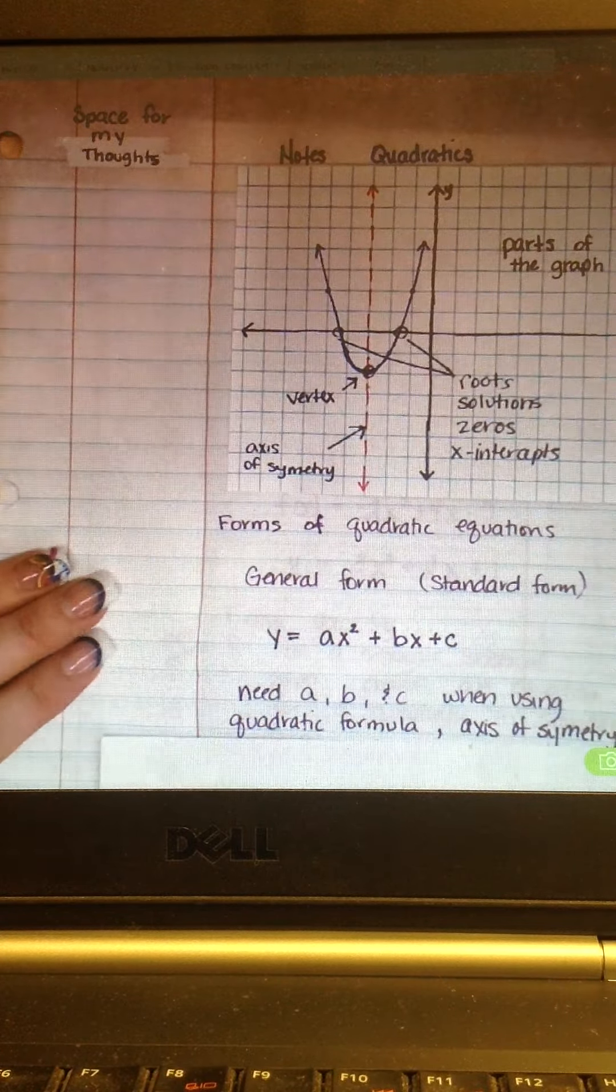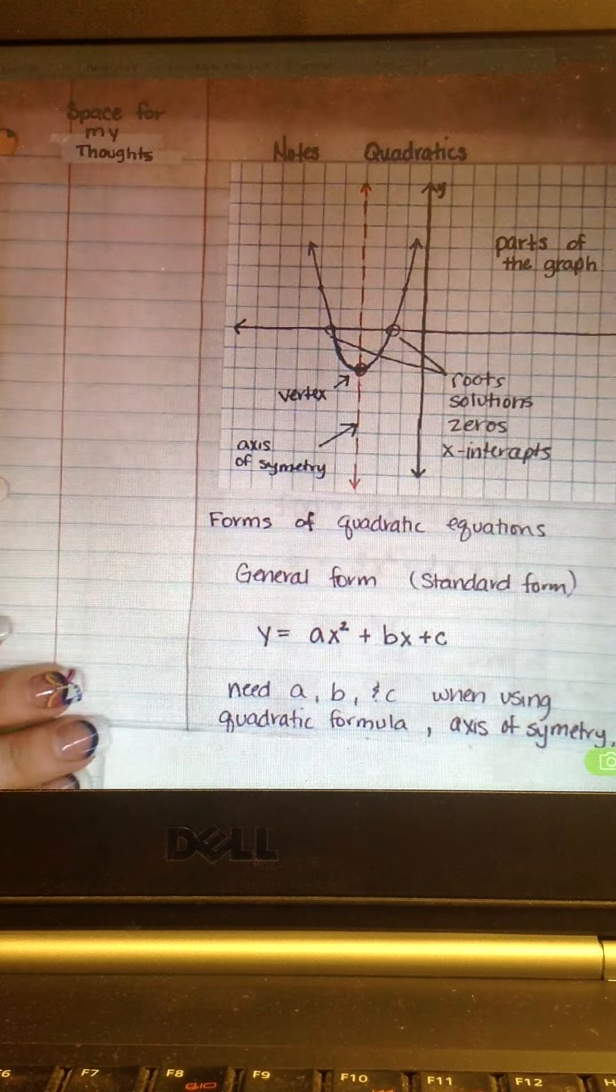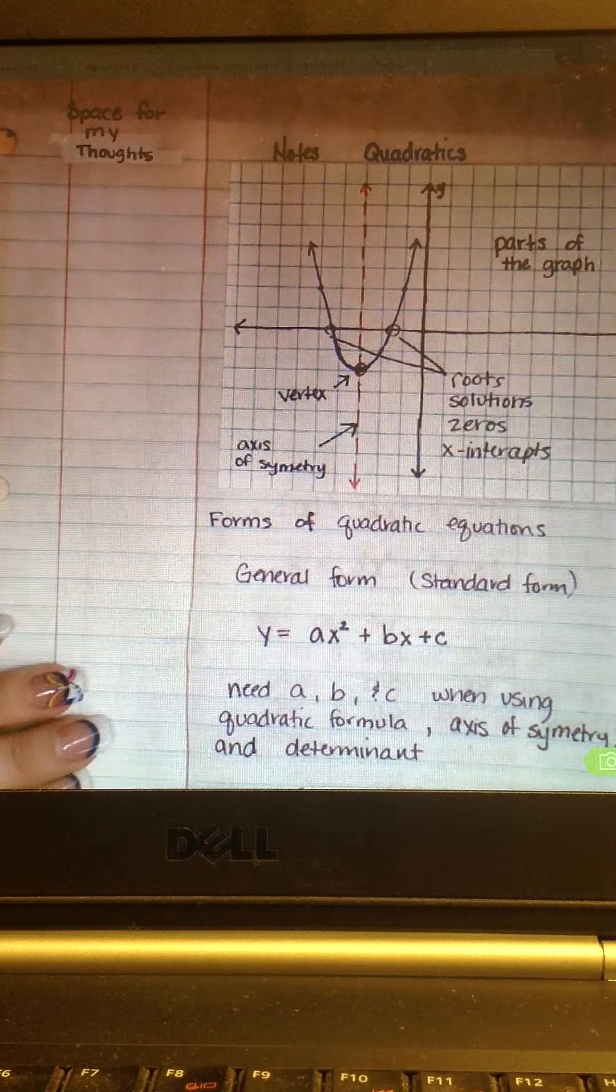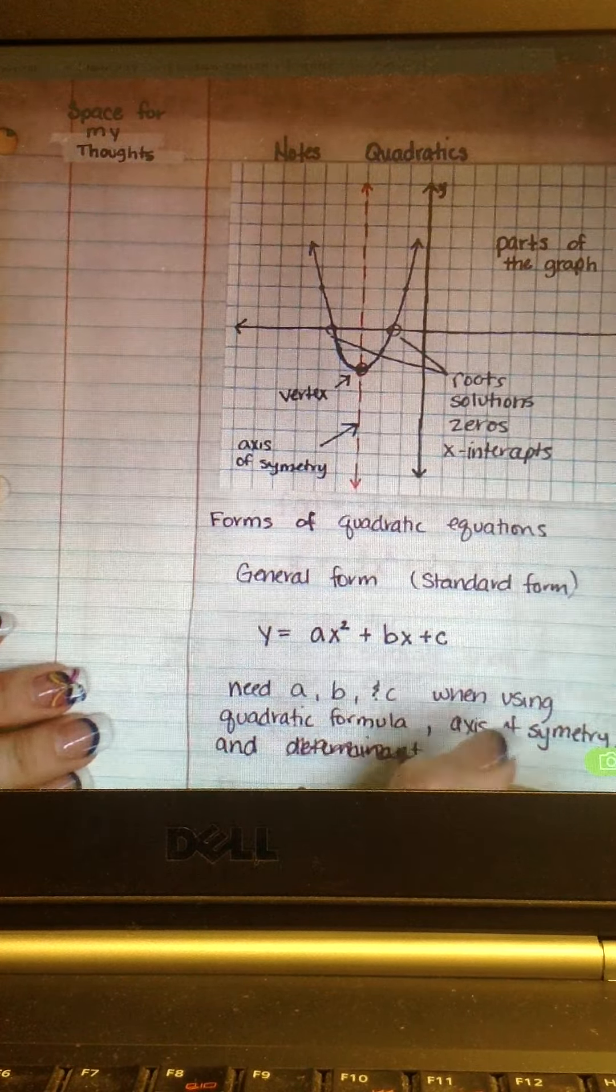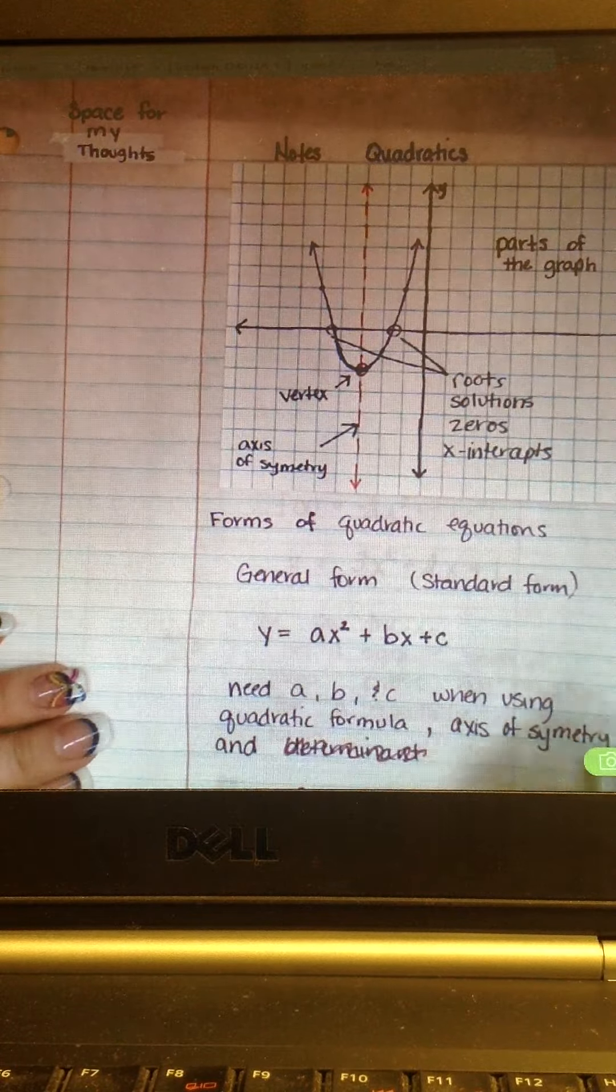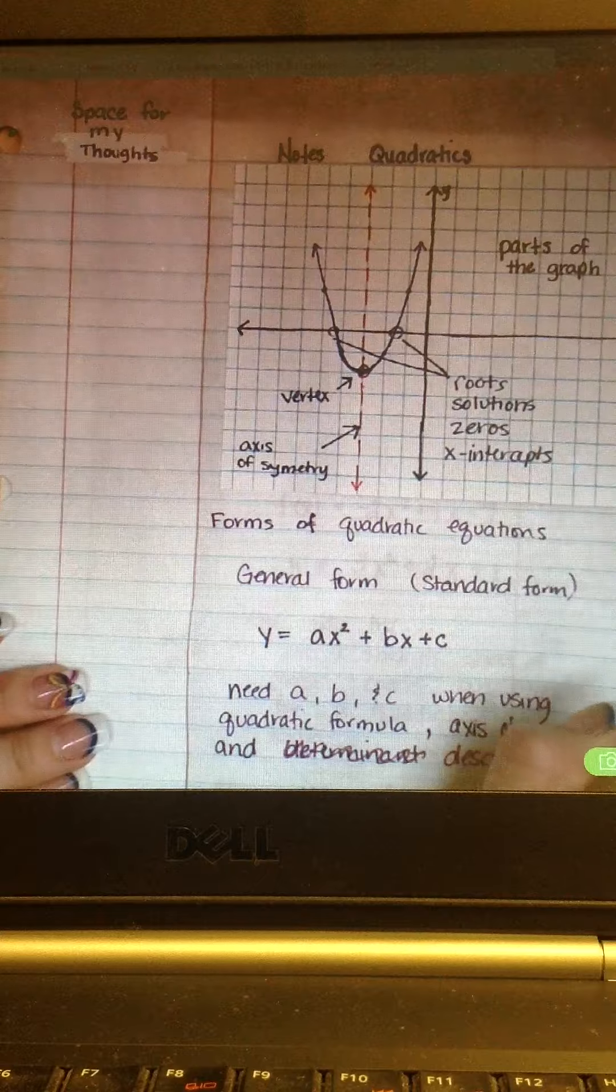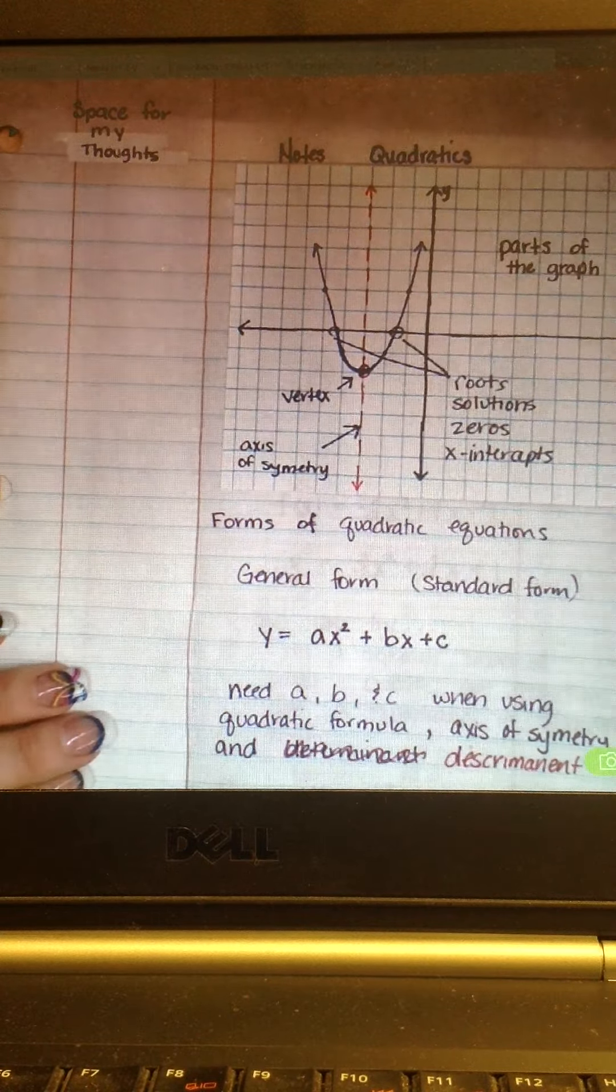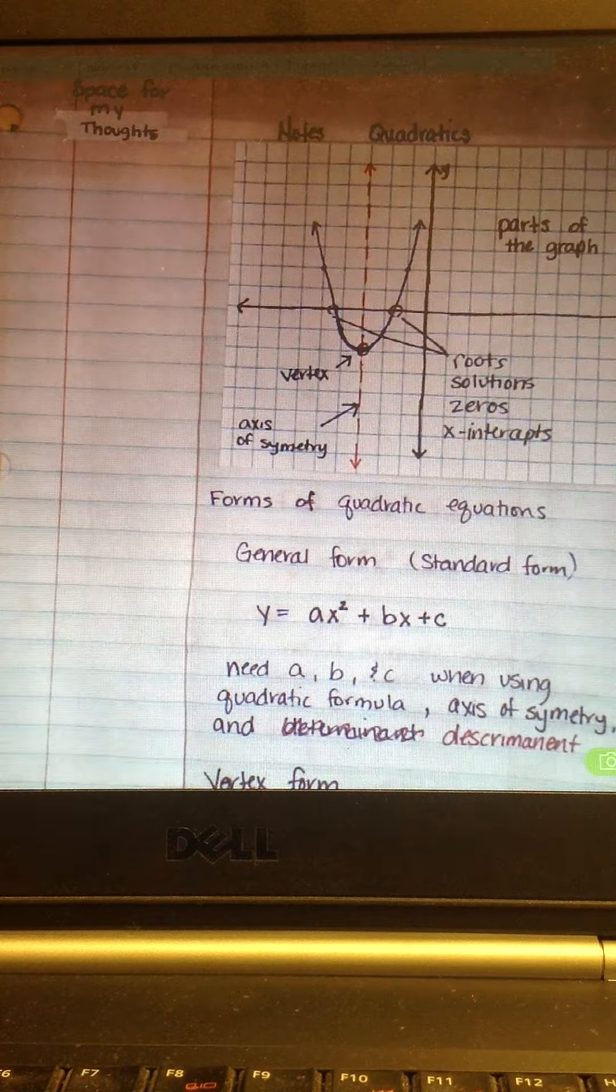You will need A, B, and C when using the quadratic formula, the axis of symmetry. And I put and determinant, but determinant is not the right word. That's a word that's used for matrices, which you'll also see next year, but that's not the right word for today. It's discriminant. That's the correct word. And we'll get into all those formulas as we continue.